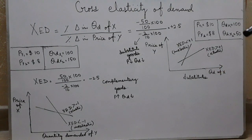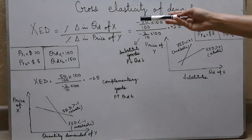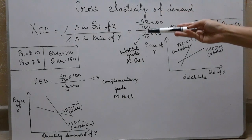Let's talk about the formula for cross-elasticity of demand. That is percentage change in quantity demanded of X divided by percentage change in the price of Y.